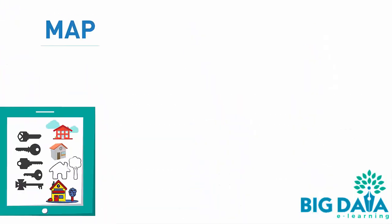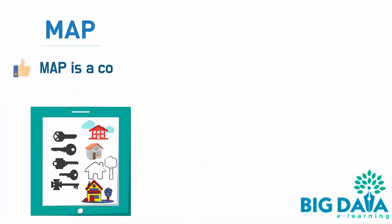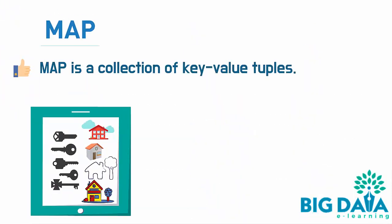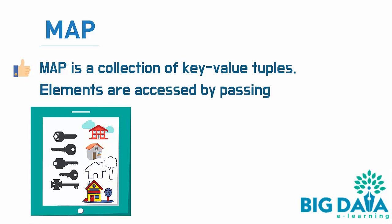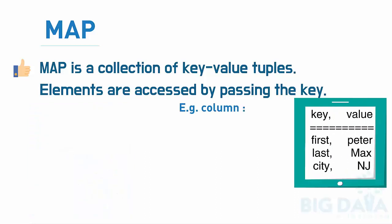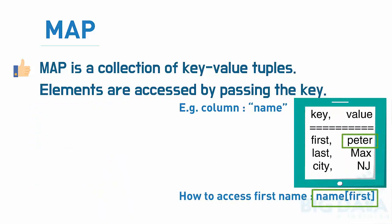Map is a collection of key-value tuples. Elements are accessed by passing the key. For example, if a map column called name exists, then the first name can be accessed by passing the key as highlighted below.